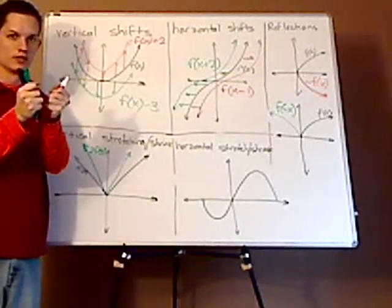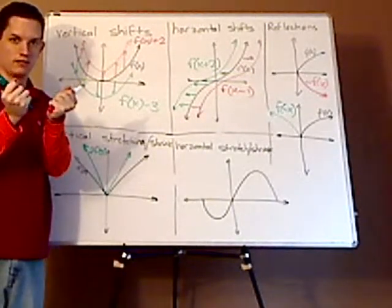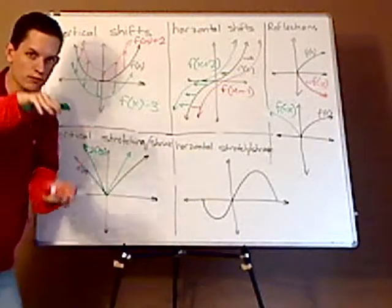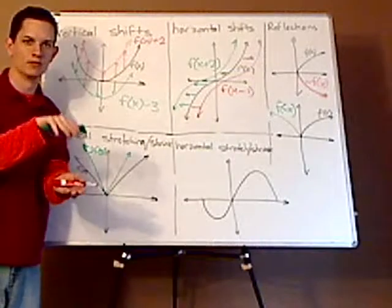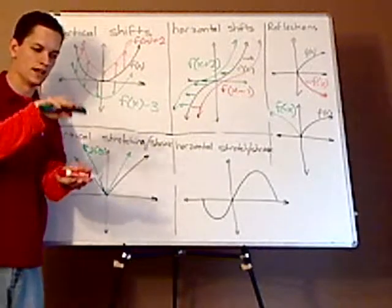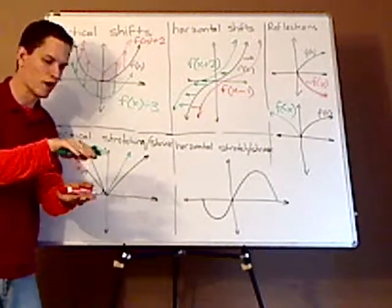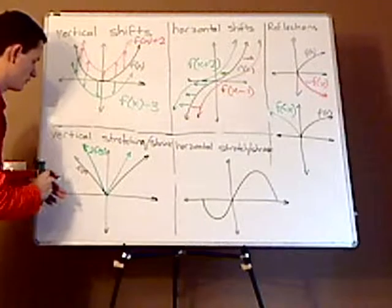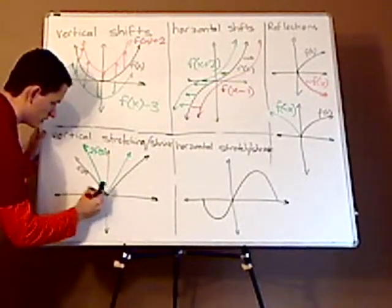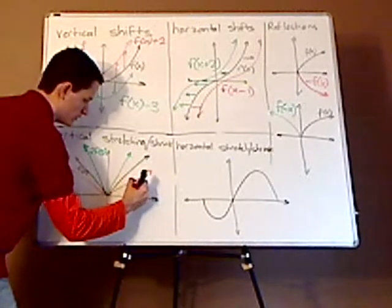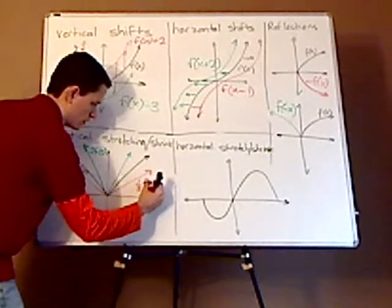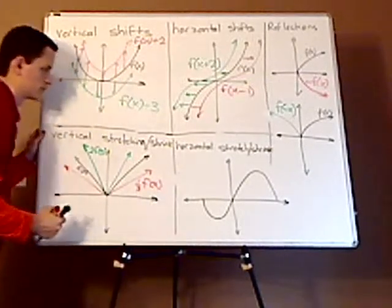If it was slower, like a fraction, right, it's pushing it down. That's where the shrink comes involved. It's slowly being compressed. So that would be like this, which would be something like one-third f of x.